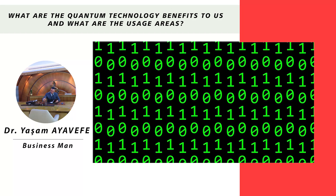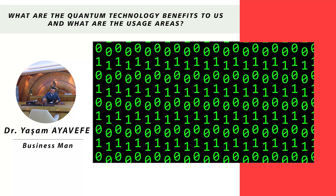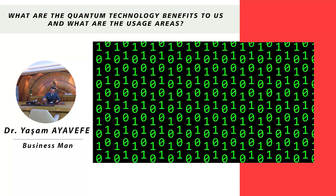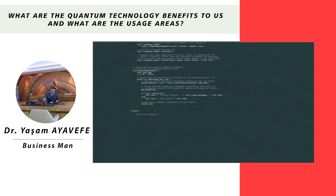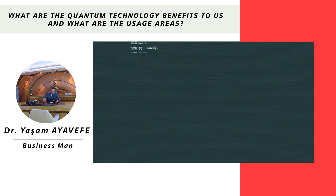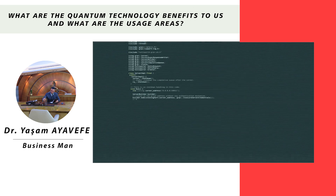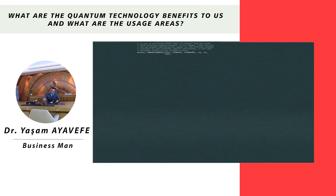To better understand the definition of quantum computers, let's recall the computer features we use. Classical computers are made up of zeros and ones. With the combination of these two numbers, all the data we see and read on the computer screen is formed. Cells holding zeros and ones are called bits. In quantum computers, on the other hand, bits are not found — information is stored in qubits.